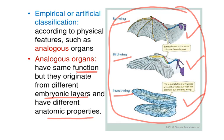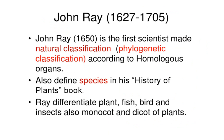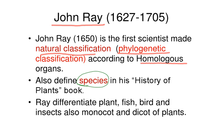We no longer use artificial classification. Instead, we use natural classification, which was started by John Ray. This is also called phylogenetic classification and is based on homologous organs along with many more criteria. John Ray also defined the species name in his book History of Plants and differentiated plants, fish, birds, and insects, as well as monocots and dicots of plants.